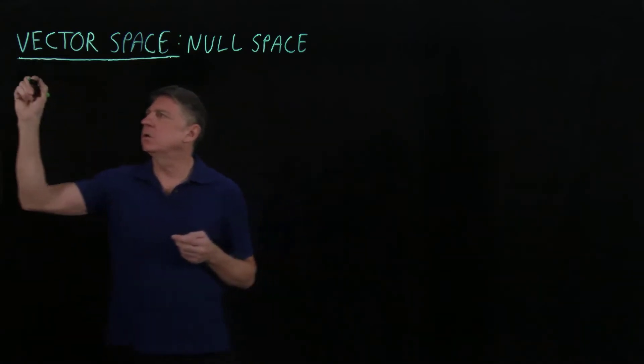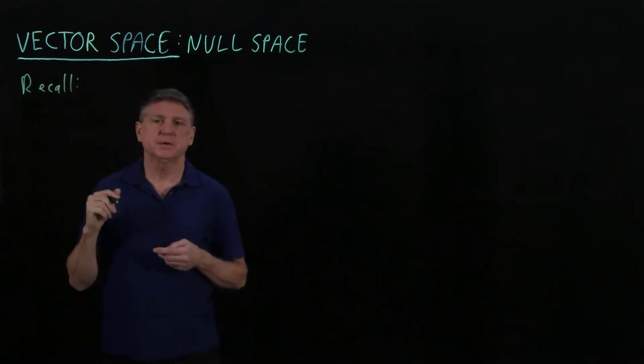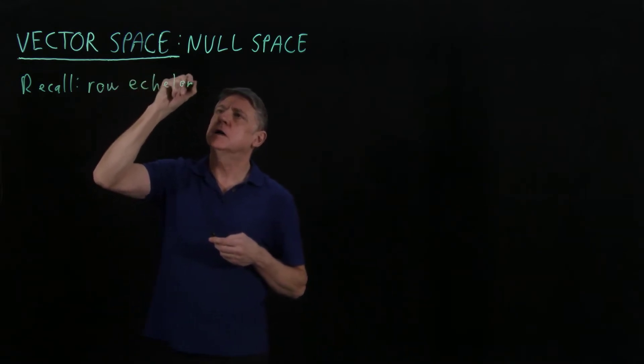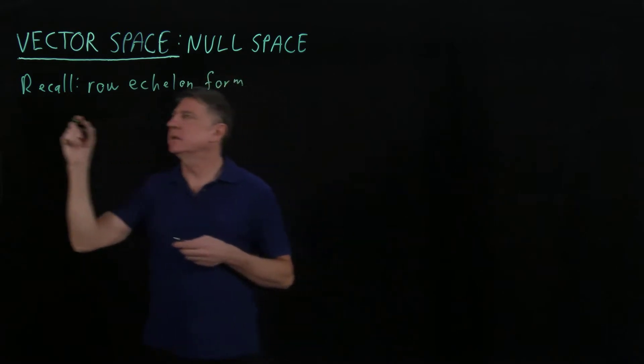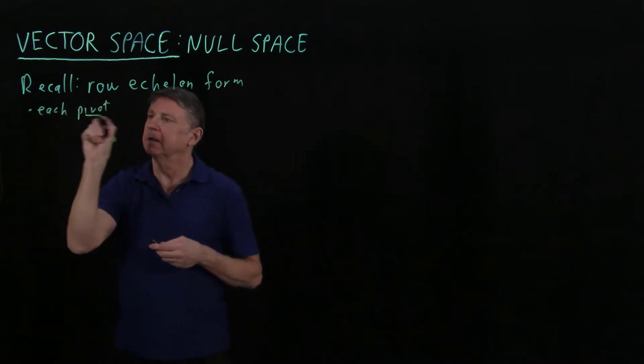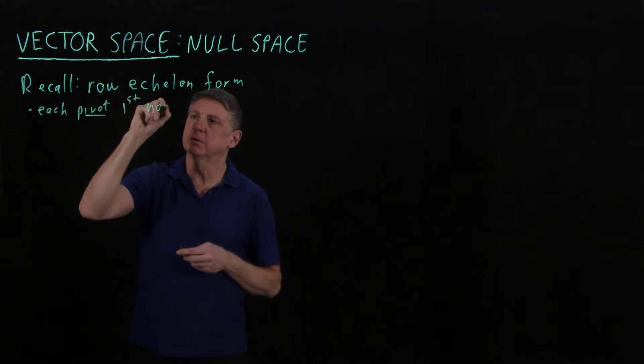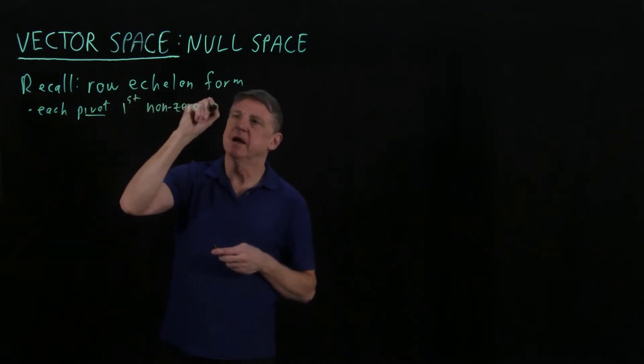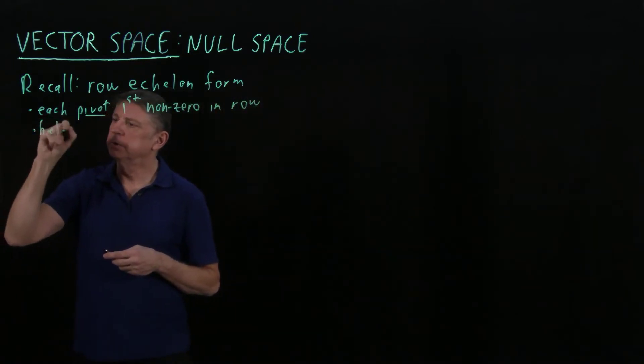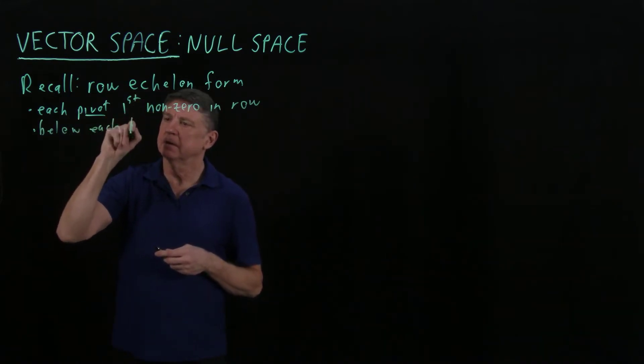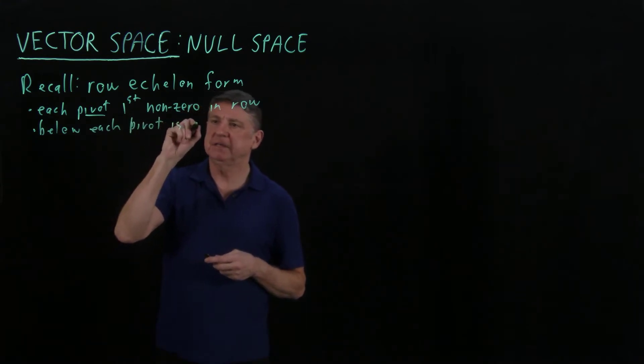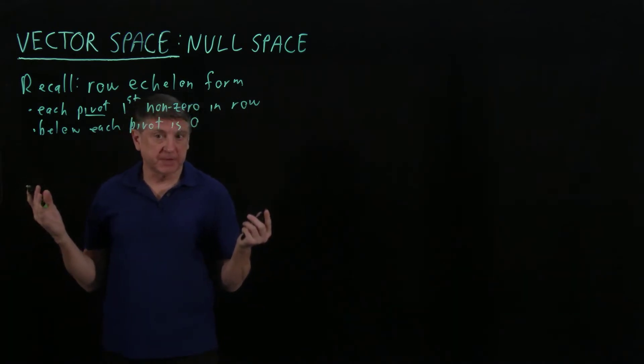Let's recall from other materials the row echelon form, which comes from Gaussian elimination. In it each pivot is the first nonzero entry in a row, and below each pivot every entry of a matrix has to be zero. We get this from Gaussian elimination.